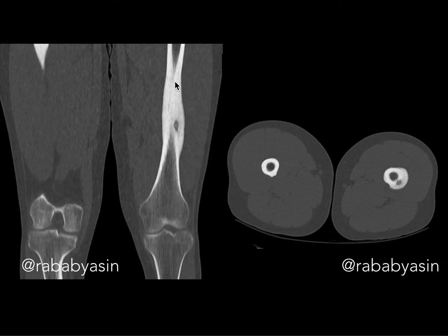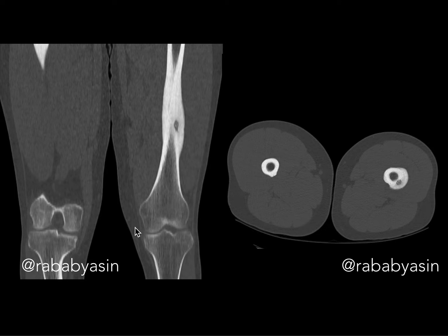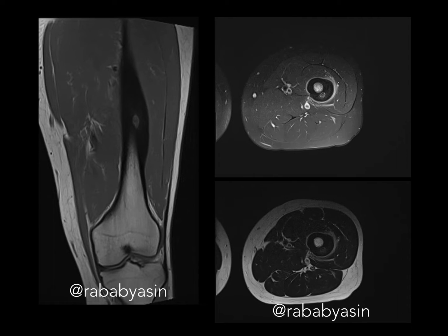Coming to CT, you can see the extensive solid periosteal and reactive bone thickening along the lateral aspect of the mid shaft of the femur. On the axial sections, you can see the left femur with extensive thickening and a central lytic nidus, with some amount of mineralized cortex within the nidus. This is a very classic and typical appearance of osteoid osteoma, with no other lesions in the same long bone.